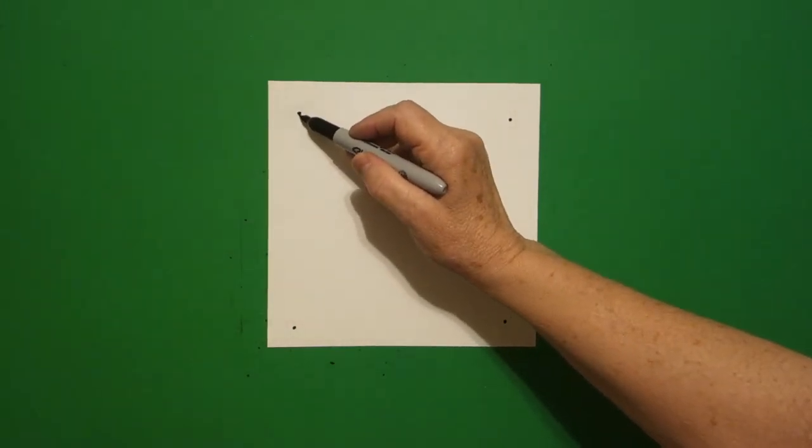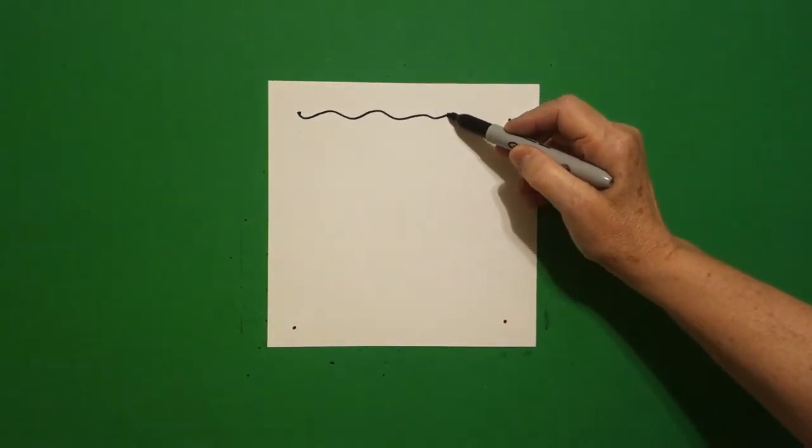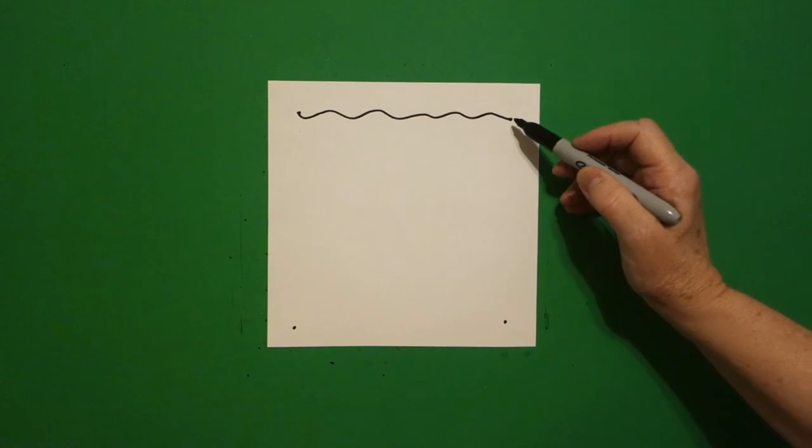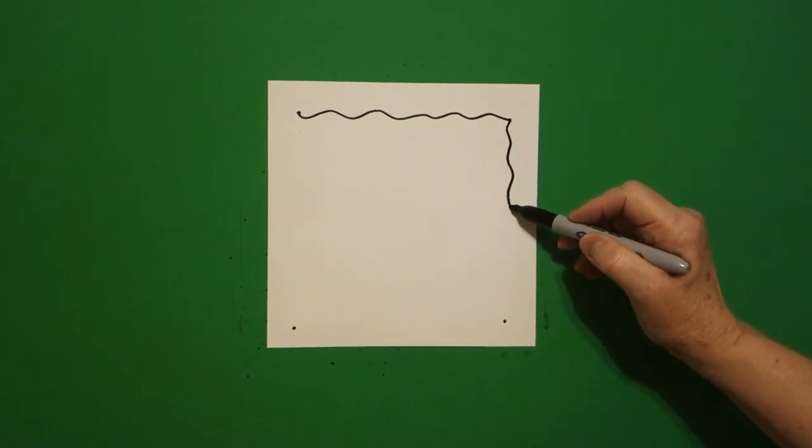Now, from every dot, I'm going to draw a wavy, wavy, wavy, wavy line. If they line up, great. If they don't, it's not going to be that far off.